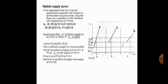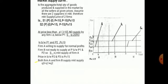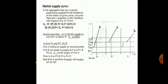Now let us deal with the last part of this lesson: market supply curve. Similar to the market demand curve, the market supply curve is the aggregate total quantity of goods produced and supplied in the market by all sellers at a given price. Assume there are only two suppliers in the market for diagrammatic purposes.